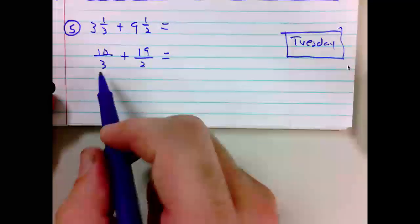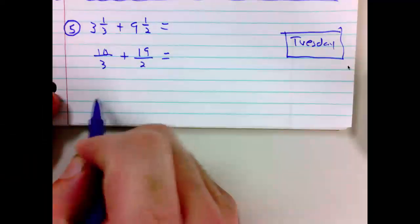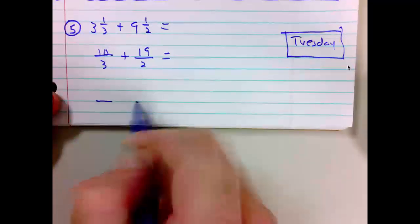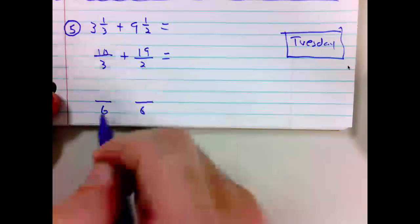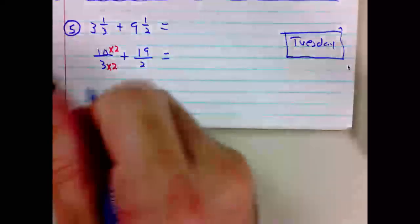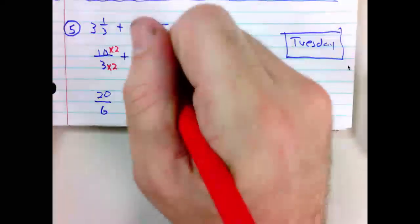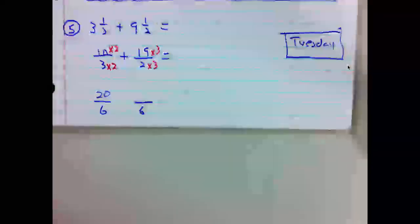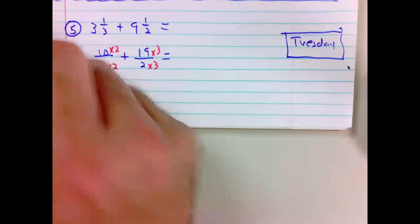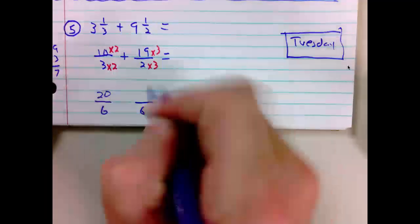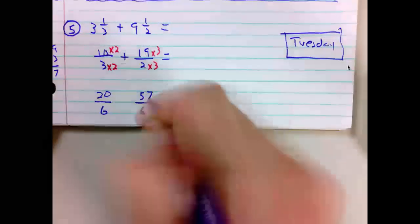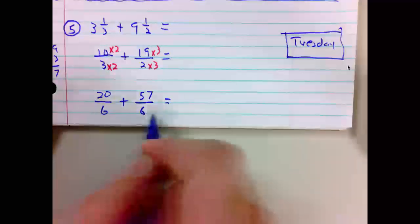We must have a common denominator. The common denominator between 3 and 2 is 6. 3 times 2 yielding 6. 3 times what gives 6? Times 2. Whatever we multiply the denominator, we multiply the numerator. 10 times 2 is 20. 2 times what? 6 divided by 2 is 3. Likewise, the numerator. Multiplying 19 times 3, I'll come out to my scratch paper. 19 times 3. 3 times 9 is 27, carry my 2. 3 times 1 is 3 plus 2 is 5. 19 times 3 is 57.